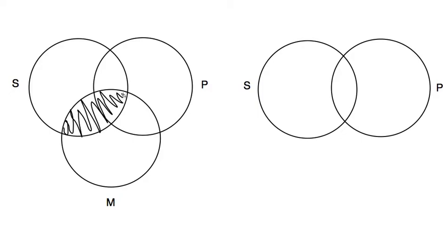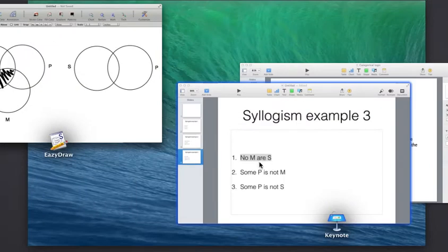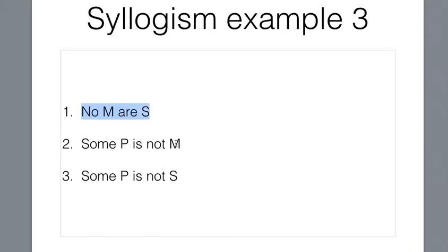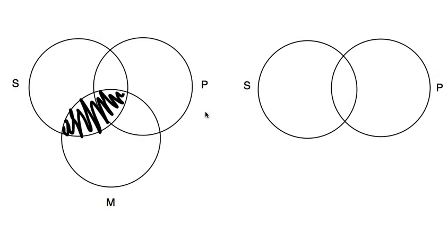Like this, very clumsily. Let's go back to, so that's that one. So let's look at the premise now, some P is not M. All right, some P is not M.